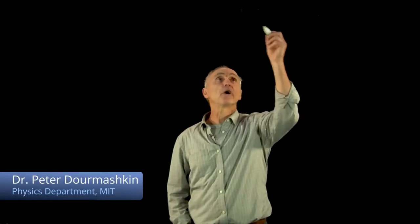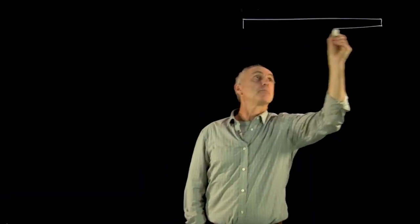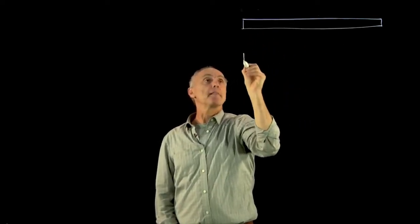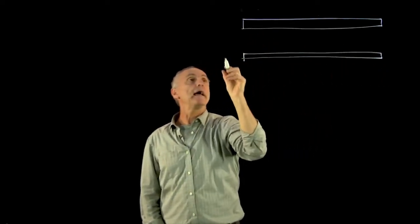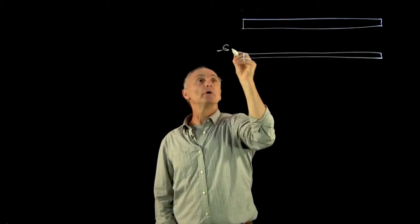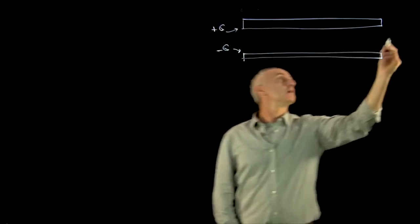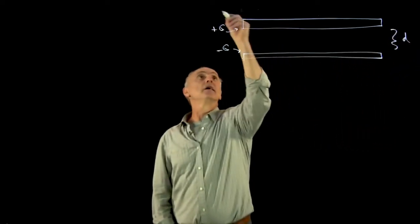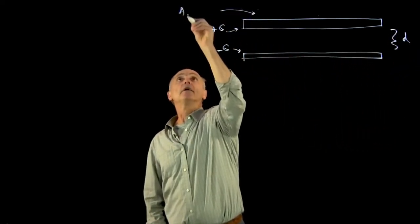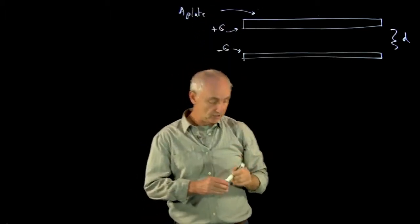Let's now calculate the capacitance of our parallel plate capacitor. Suppose we have a plate and another conducting plate. We put a charge minus q on this one and a plus q on this one. The plates are separated by a distance d, and the plates have an area — I'll call it A-plate to distinguish that.